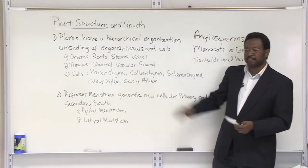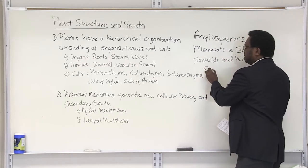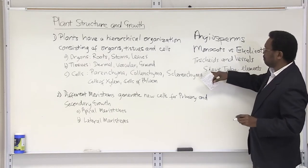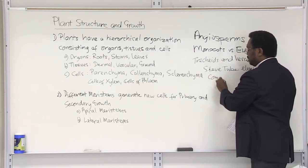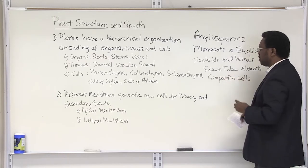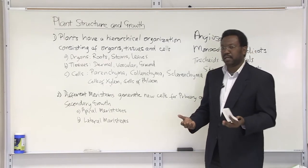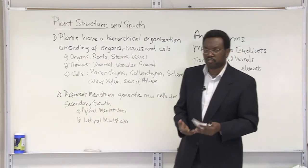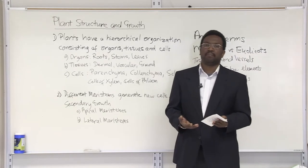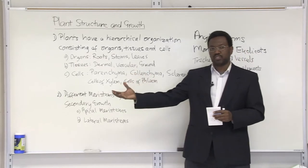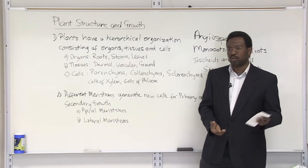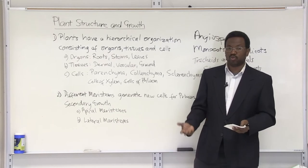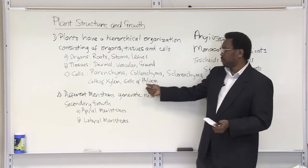Then we've got the phloem cells. Phloem is made up of sieve tube elements, which are the conducting vessels, and companion cells, which are neighboring cells that nourish the sieve tube elements and keep them alive and healthy. The phloem is responsible for transporting sugar and other organic nutrients that the plant makes in the leaves during photosynthesis, transporting them to other areas of the plant where they're stored, predominantly in the roots.